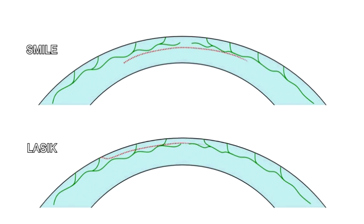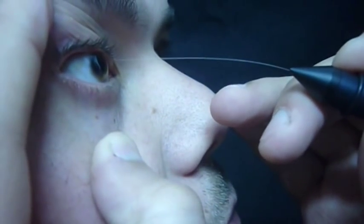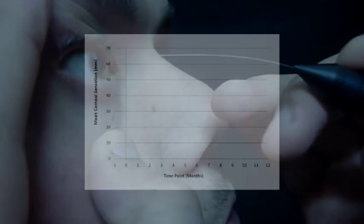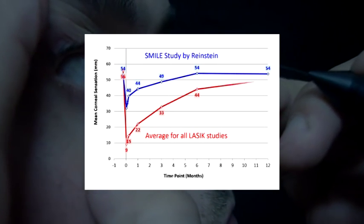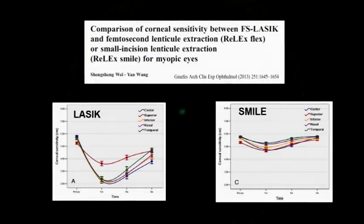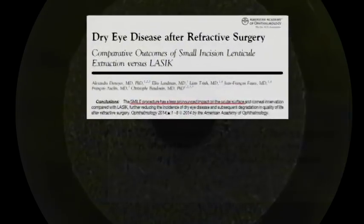The corneal nerve bundles at the anterior stroma are less altered by the lenticule removal than by the flap plus laser ablation. A Cochet-Bonnet Aesthesiometer study by Reinstein documented the mild reduction of corneal sensation after SMILE, which is much less pronounced than the hypoesthesia that follows LASIK. This explains why there is apparently less neurotrophic epitheliopathy and dry eye scores after SMILE.